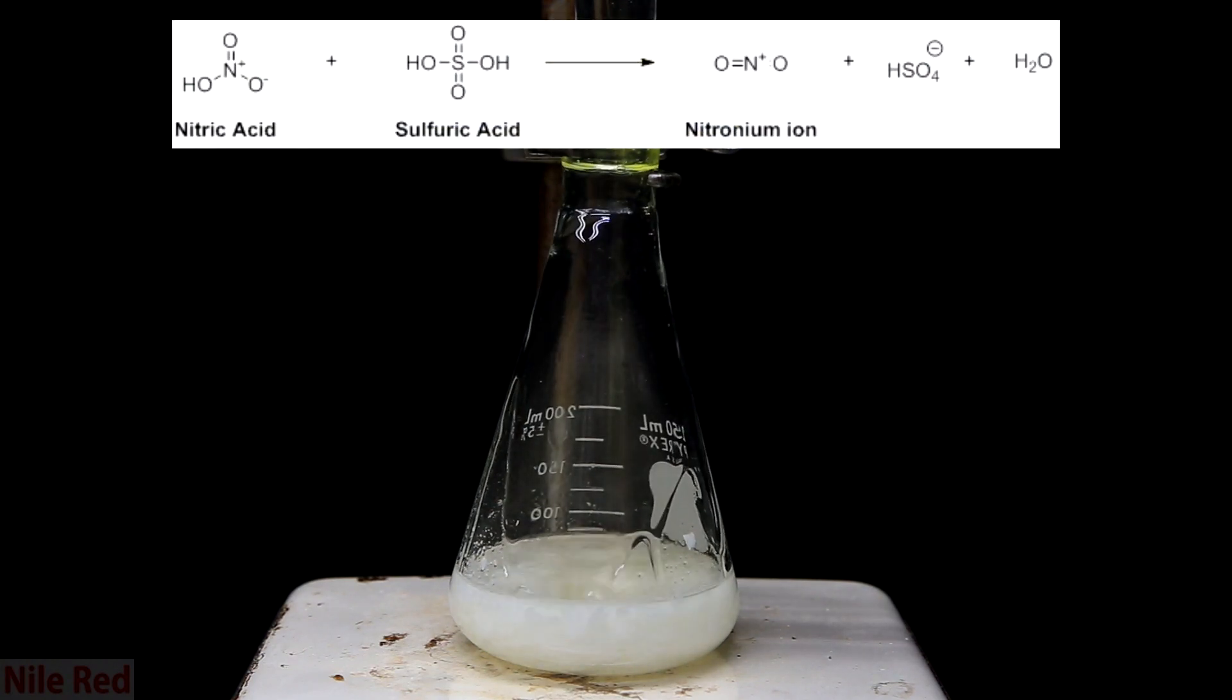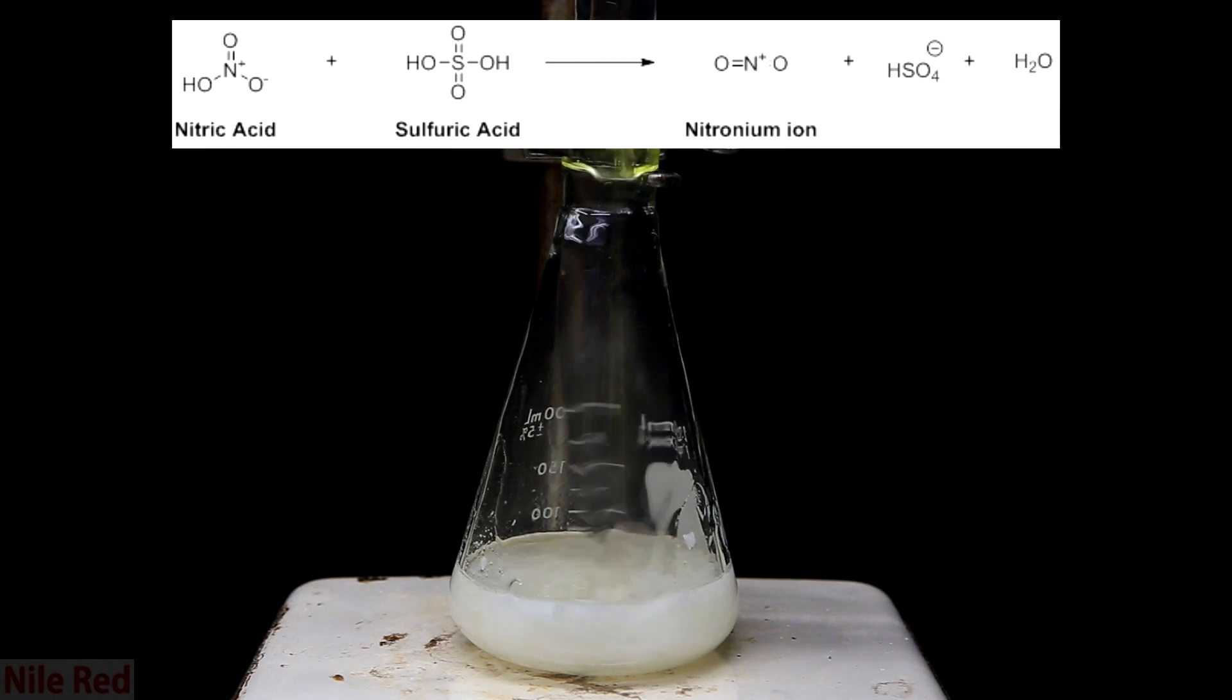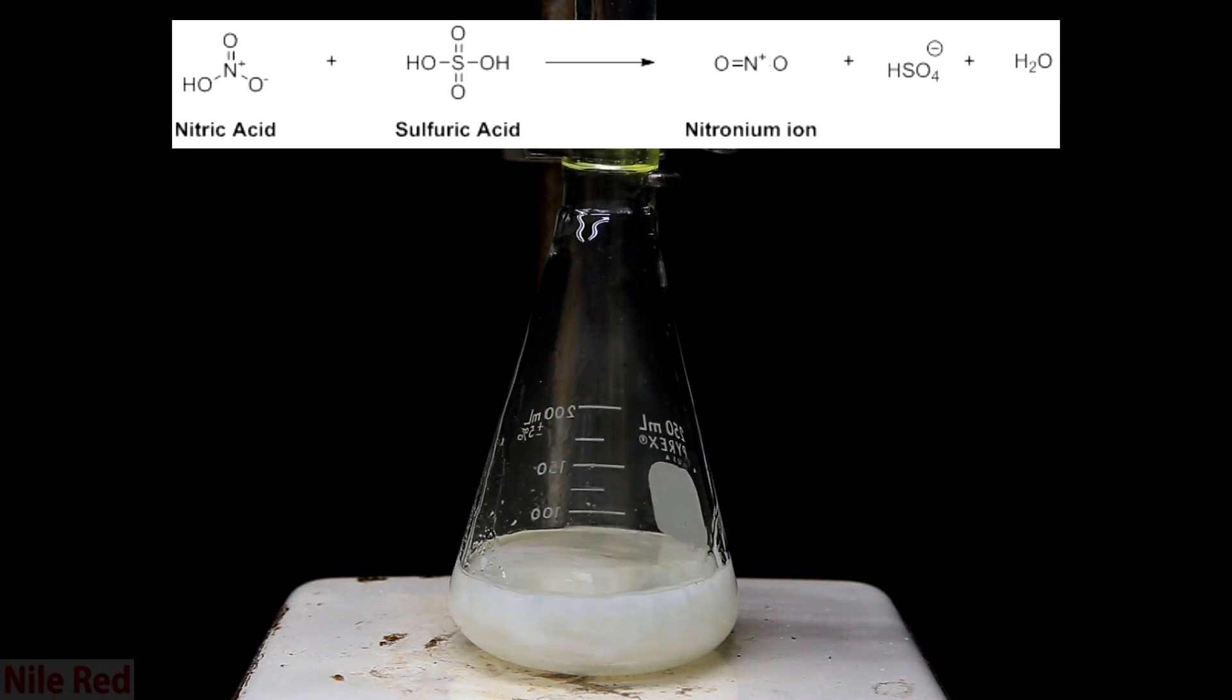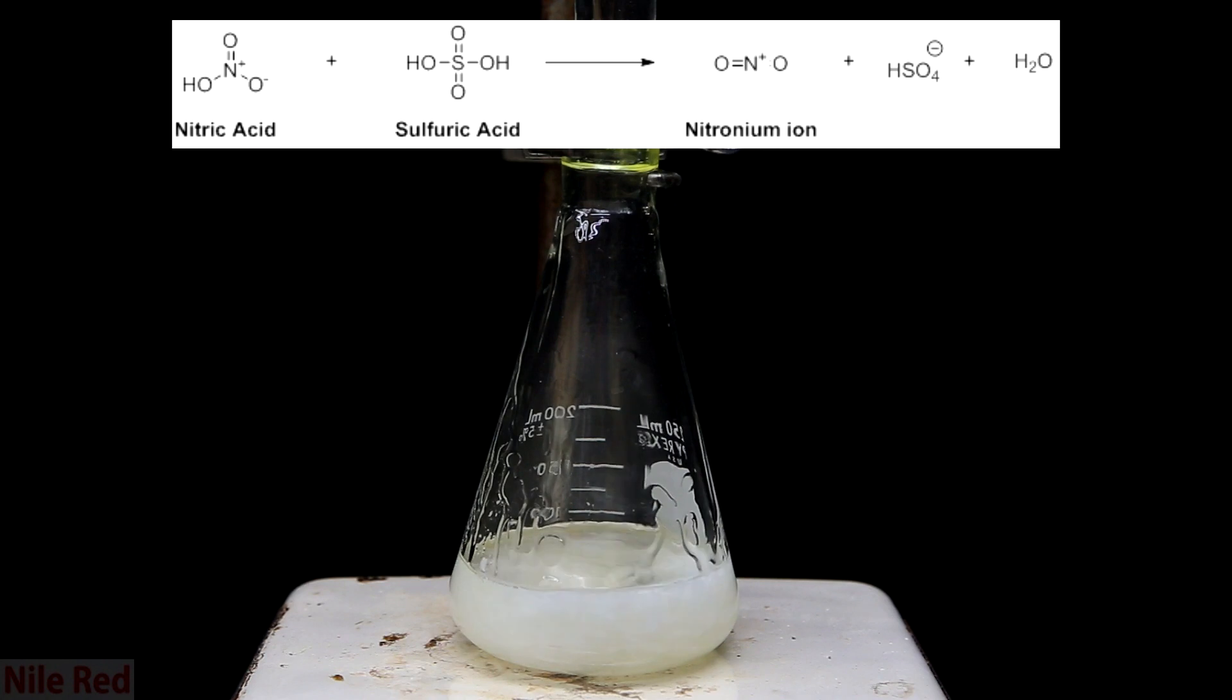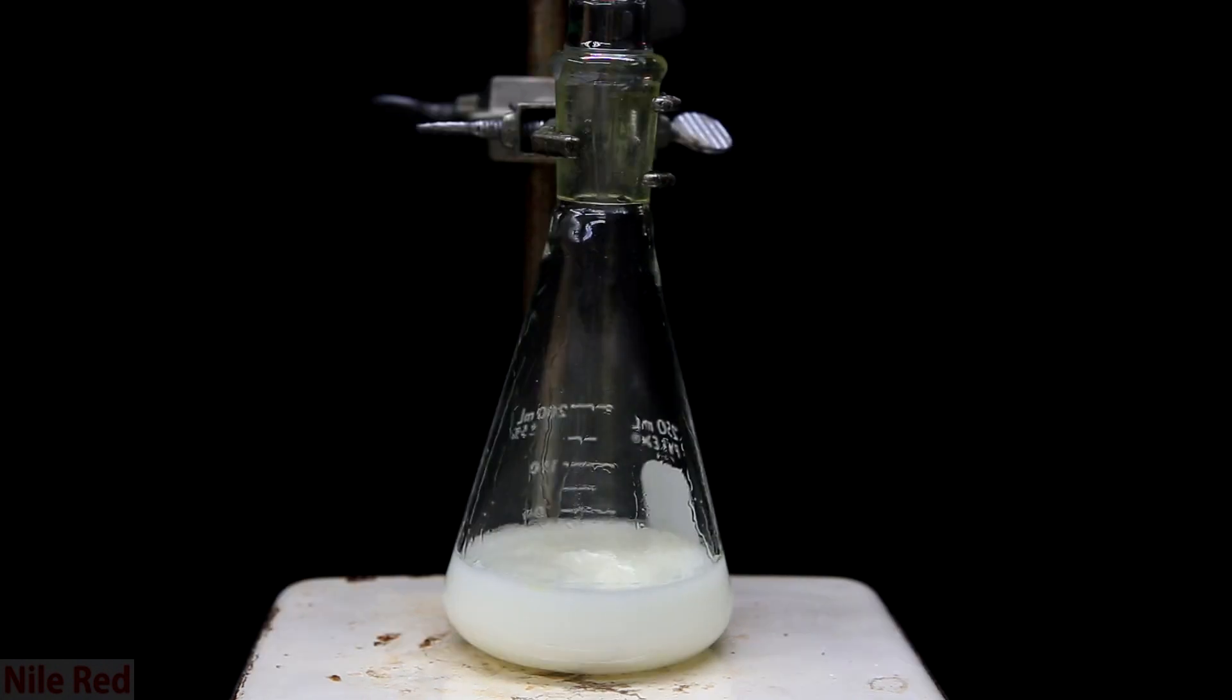We use this mixed acid system because the sulfuric acid reacts with the nitric acid to form the nitronium ion. Nitric acid alone won't work really to add an NO2 group and we really need the sulfuric acid to prepare it. It's stirred for a little while at room temperature and it becomes this opaque white color.